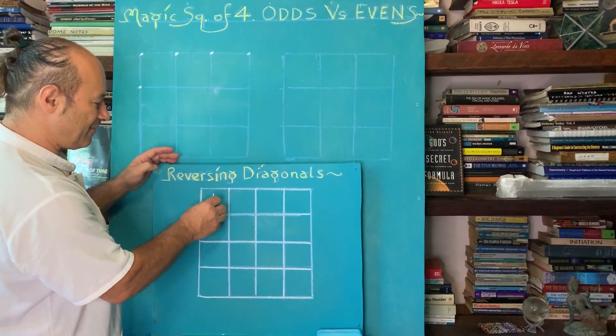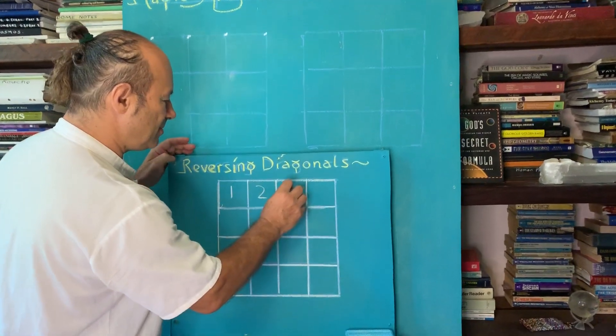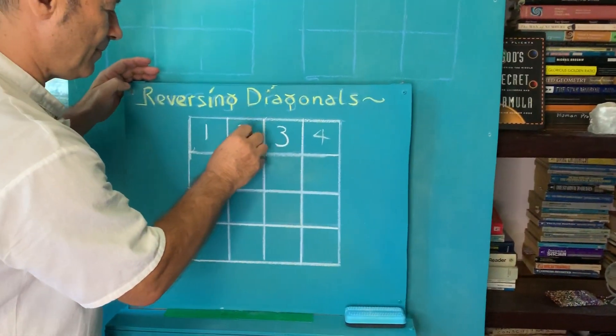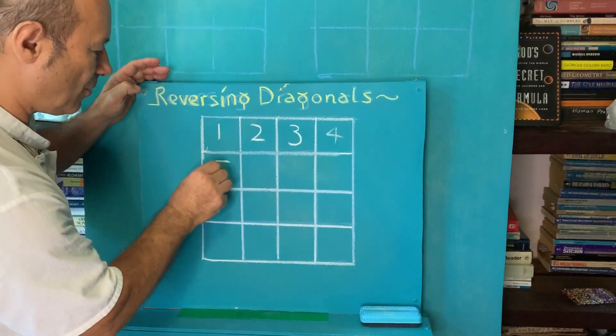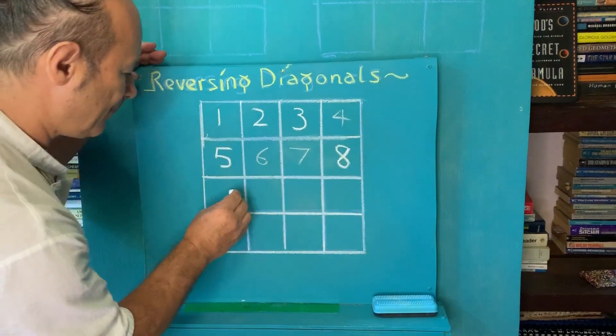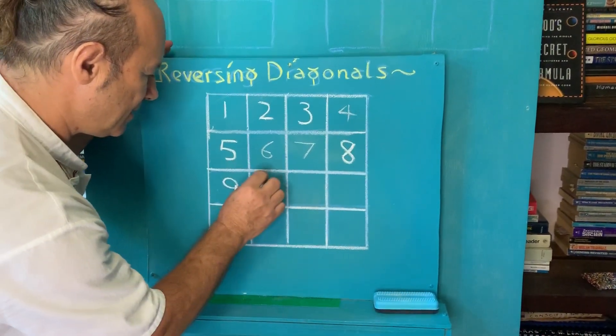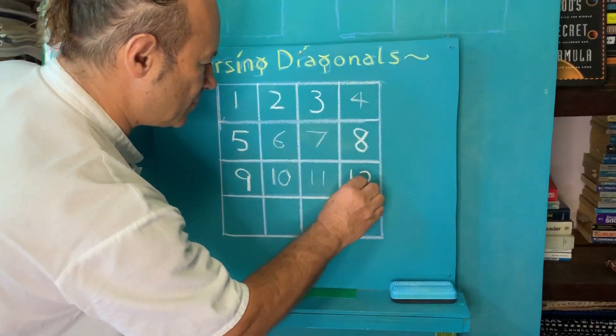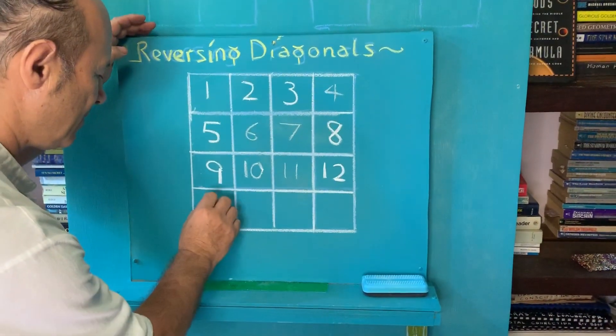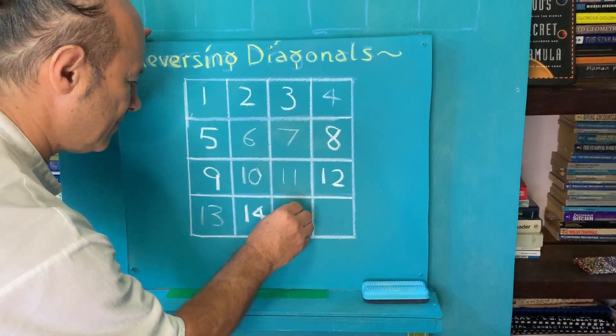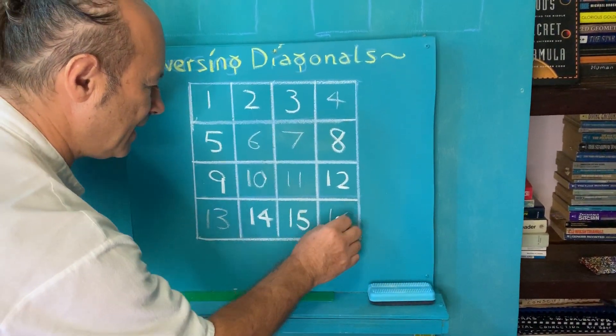So when I say consecutive I'm going 1, 2, 3, 4, 5, 6, 7, 8, 9, 10, 11, 12, 13, 14, 15 and 16.